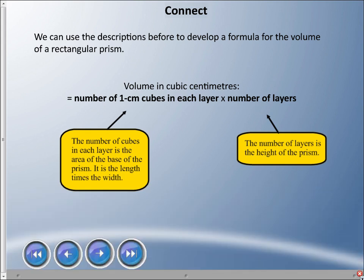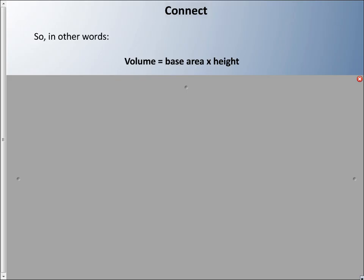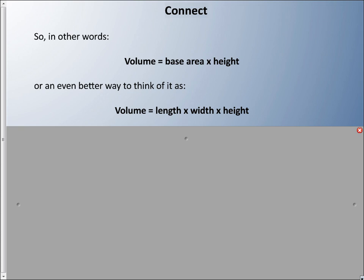Just to clarify this: the number of one-centimeter cubes in each layer is the base, and that's kind of the area we talked about last time. Now it's making a three-dimensional object. The number of layers is the height of the prism. In other words, volume could be the base area times its height, or another better way to think of it is volume equals length times width times height.